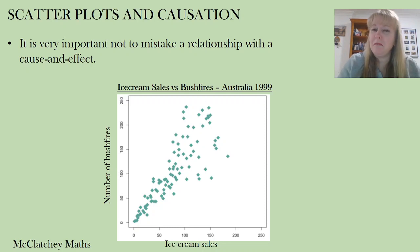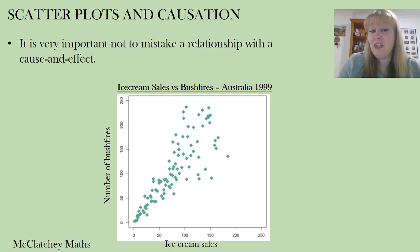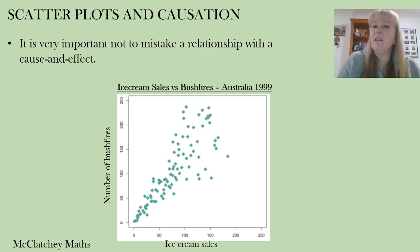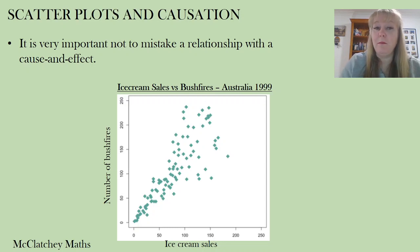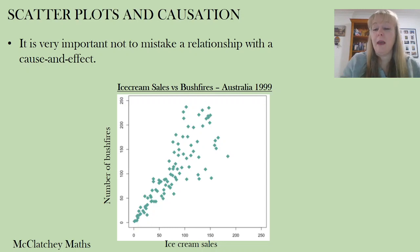They actually both have an underlying cause that hasn't been graphed — probably the fact that it's very hot. There's no temperature variable on this scatter plot, so there's an external cause. You can see there's definitely a relationship between ice cream sales and bushfires, but they don't necessarily cause one another.